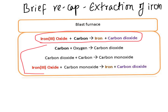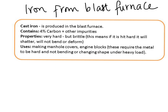In this lesson we are going to look at the properties of iron obtained from the blast furnace — what it is made of, its properties, and how it is useful. We will also look at how converting it into different types of steel by mixing with carbon or other metals changes its properties. Iron straight from the blast furnace comes as molten iron, which can be poured into casts and molded into shapes. This iron is very hard but brittle, meaning it shatters on impact.